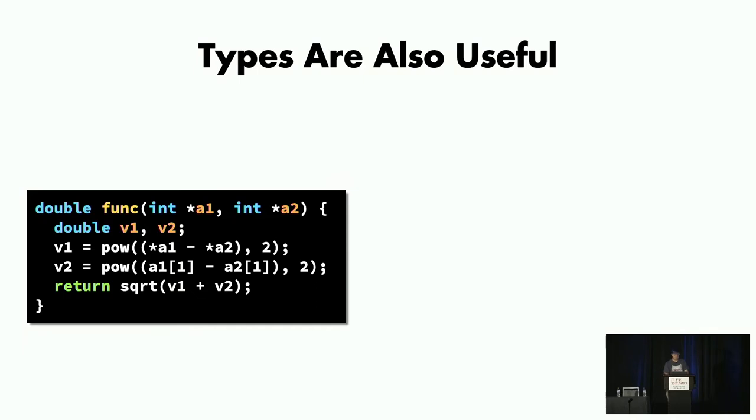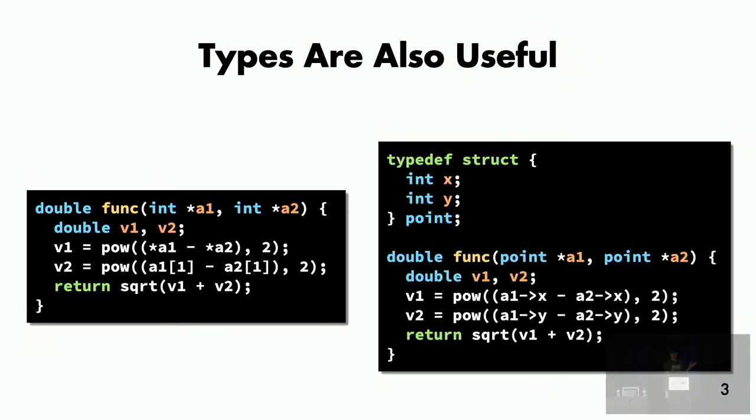In addition to variable names, it turns out types are also useful. In this example that might be output by a decompiler, without knowing about a user-defined data type, the decompiler doesn't understand that the operations on A1 and A2 are actually structural dereferences. So it outputs a pointer dereference and an array indexing operation instead. If we instead tell the decompiler about this type defined by the programmer, it becomes much clearer that this function is computing the distance between two points in 2D space.